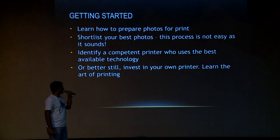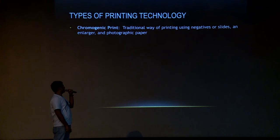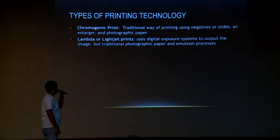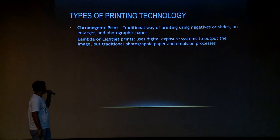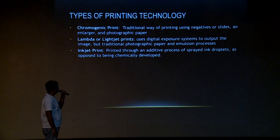What are the different types of printing technology in the market? First is the chromogenic print, which is the traditional way of using negatives or slides and exposing to get the photograph on paper. Then there's the Lambda or Lightjet print, which uses a digital exposure system — what most photo labs use. If you go to a photo lab and give your photos for print, they use a continuous tone printer with traditional photographic paper and emulsion process. Then there is inkjet printing technology, which is what I use personally — small drops of ink are sprayed onto special paper with a special coating. The advantage of this technology is that it is available both to the home user and the professional user.